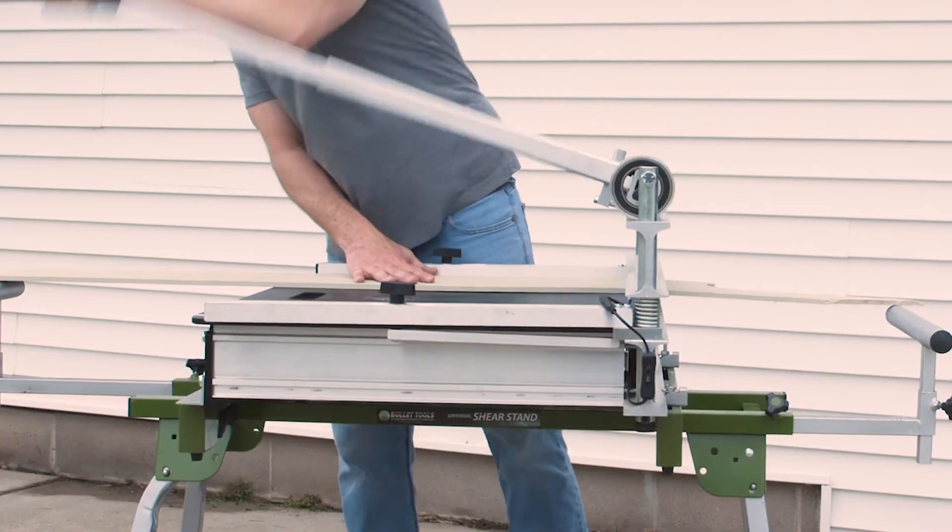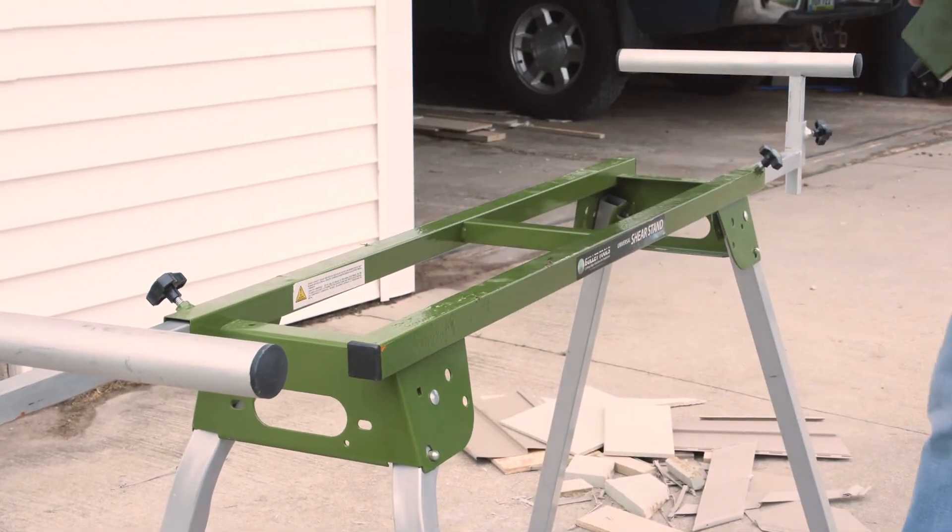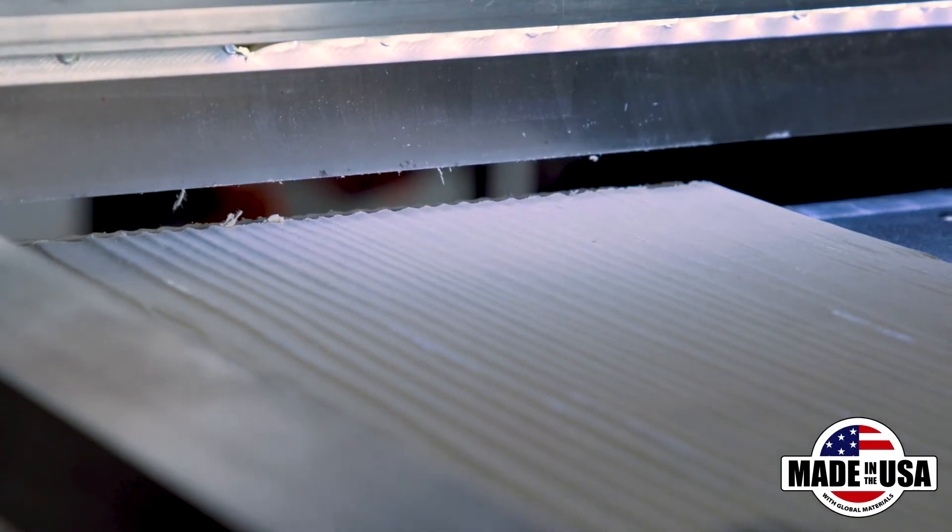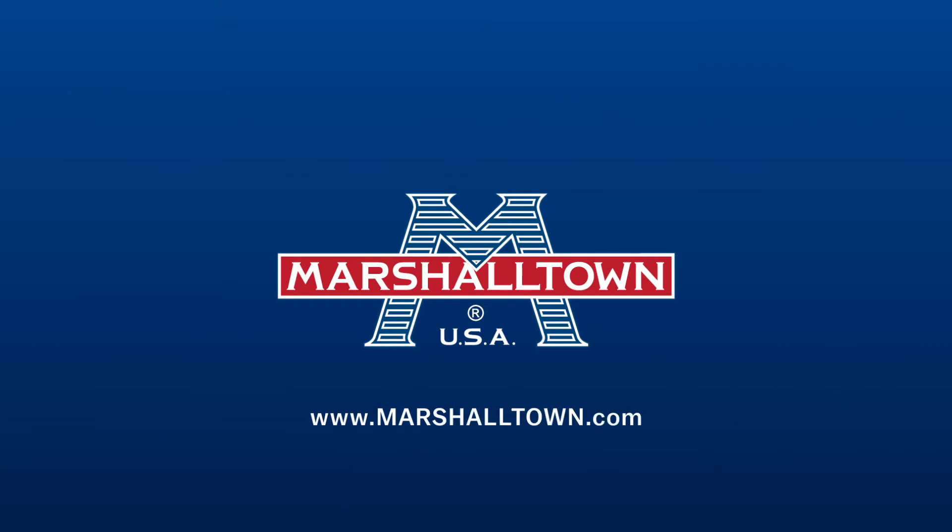Our siding shears are made of aircraft-grade aluminum for durable, lightweight transfer from job to job. All Bullet by Marshalltown siding shears are made in the USA. Visit marshalltown.com to get your siding shear today.